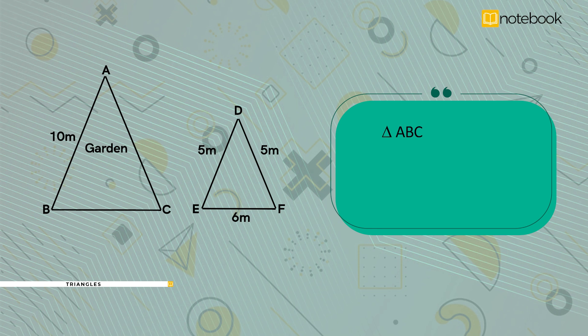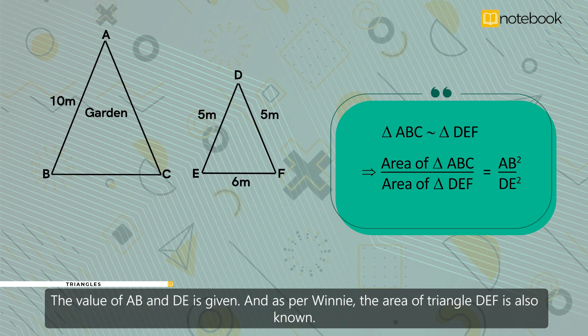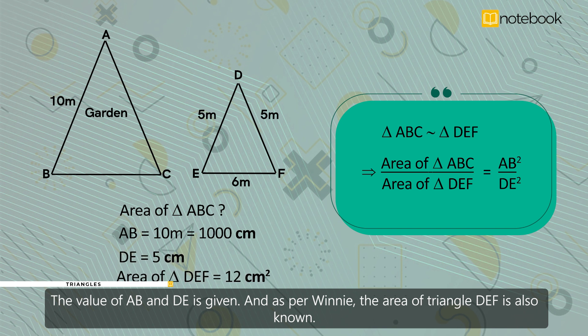So, area of triangle ABC by area of triangle DEF is equal to AB square by DE square. The value of AB and DE is given. And as per Winnie, the area of triangle DEF is also known.